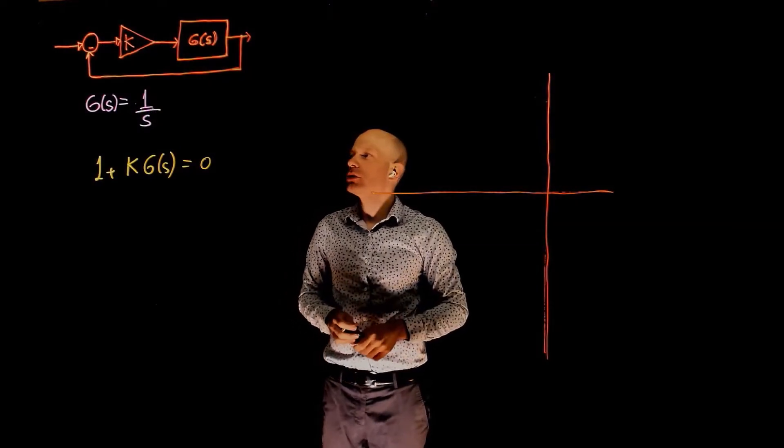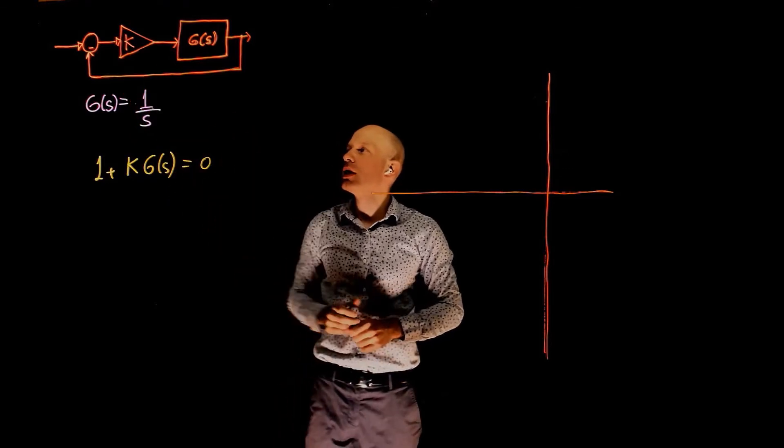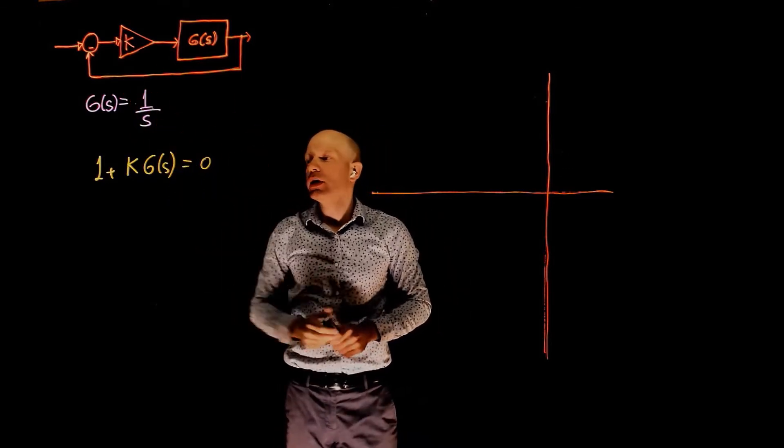In this second example, the plant transfer function is simply 1 over s, and we still have a control gain k, so our loop function here is k over s.